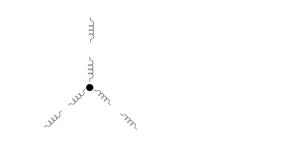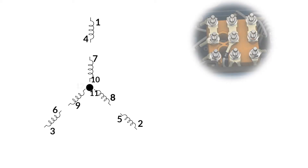This is the 9-lead star connection. The first coil is number 1 and number 4 terminal, second coil is number 2 and number 5 terminal, third coil is number 3 and number 6 terminal, fourth coil is number 7 and number 10, fifth coil is number 8 and number 11, sixth coil is number 9 and number 12. Note that number 10, number 11, and number 12 are connected to each other at neutral.